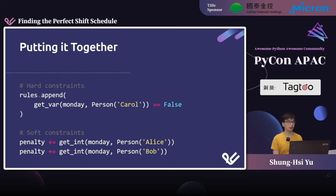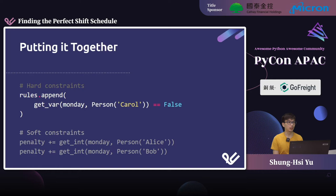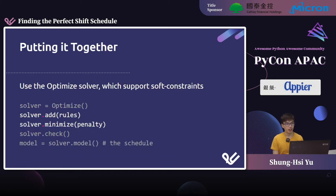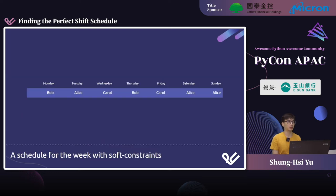Putting this together: since Carol has a genuine urgent issue, we leave her constraint as a hard constraint set to false. For Alice and Bob, it's their preference, so we use soft constraints. We also need a minor change — instead of calling solve, we use the optimizing solver and tell it to minimize the penalty. With that, we get a valid schedule instead of UNSAT — Bob still has to work Monday, but Carol doesn't, and we have a schedule.